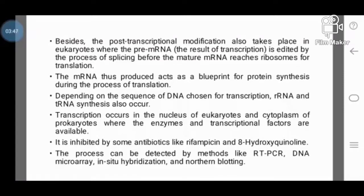Depending on the sequence of DNA chosen for transcription, rRNA and tRNA synthesis also occur. Transcription occurs in the nucleus of eukaryotes and cytoplasm of prokaryotes, where the enzyme and the transcriptional factors are available. It is inhibited by some antibiotics like rifampicin and 8-hydroxyquinoline. The process can be detected by methods like RT-PCR, DNA microarray, in-situ hybridization, and northern blotting.